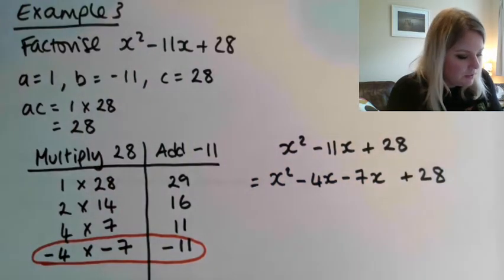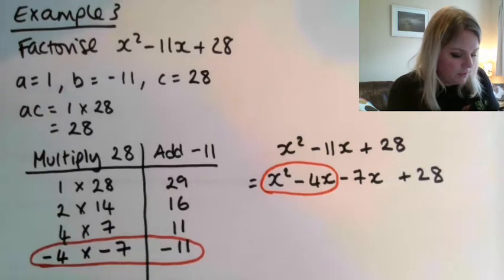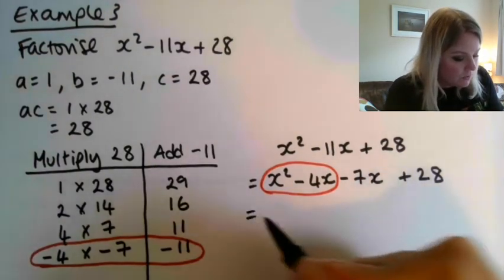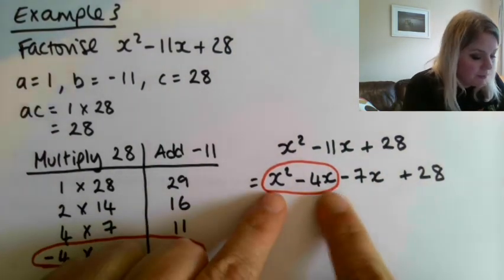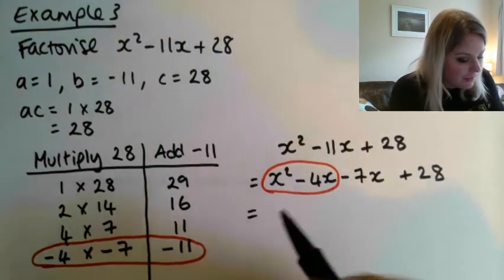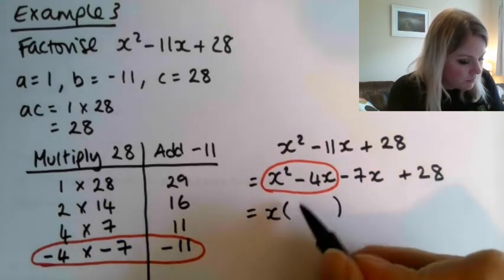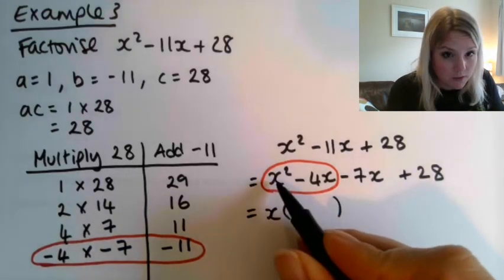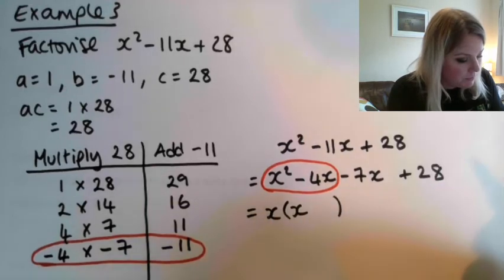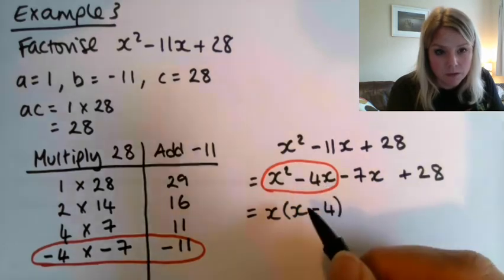Then, take the first two terms and factorize them. So look and see, what can I bring outside of the bracket here, what is common to both of these terms, and it is x. And x multiplied by x gives me that x squared. x multiplied by minus 4 is going to give me that minus 4x.